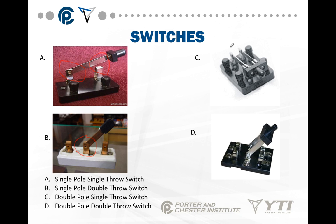In diagram B, the switch can go in two directions, so it's considered a single pole, double throw switch. We can take this a step farther in picture C — you notice we have two poles. In other words, there are two contacts made at the same time. The same in picture D: we have two contacts made at one time. Picture C is a double pole, single throw — it can only go in one direction to make contact. Picture D is a double pole, and double throw because it can go in either direction to make contact.